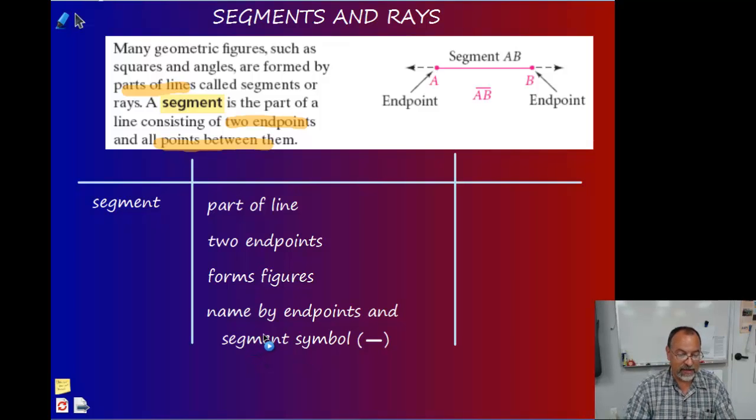Now, we name a segment. It's a part of a line. How do we name a line? Use any two points on the line. When we're naming a segment, we can't use any two points in the segment. We actually have to use the endpoints of the segment. So the two letters that we decide to use are the ends of the segment, and then all the points in between included with those two points are what makes up a segment.